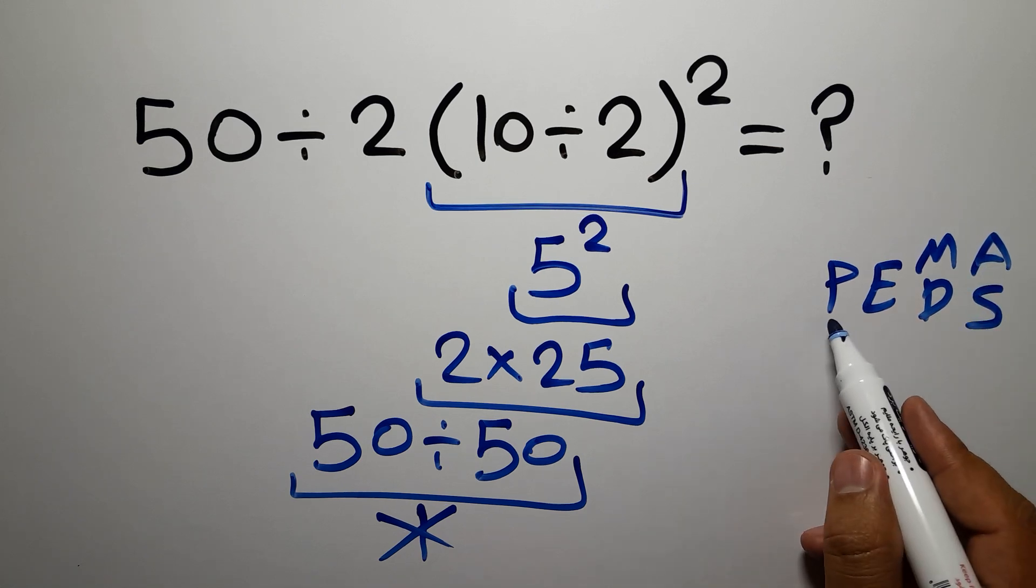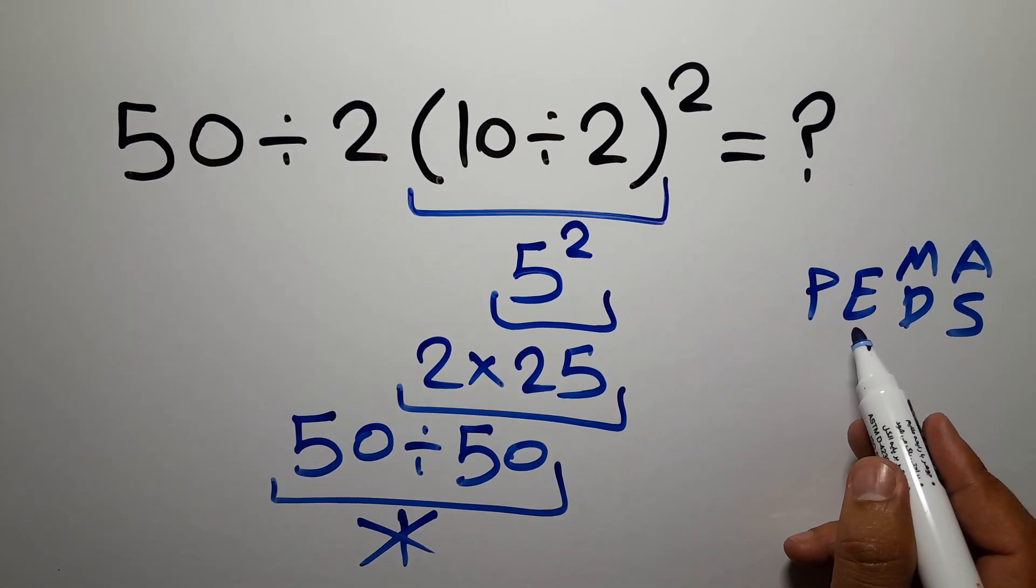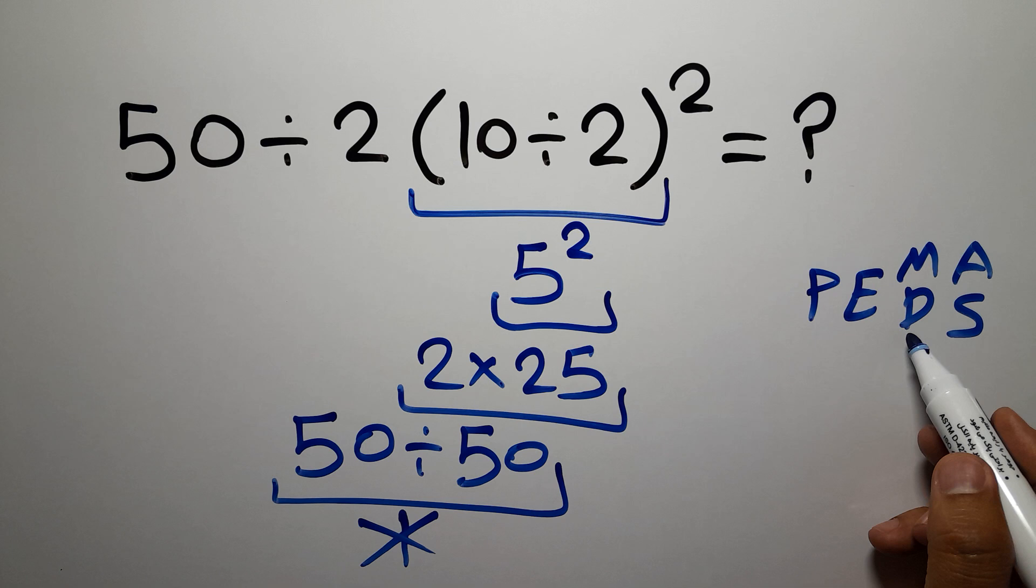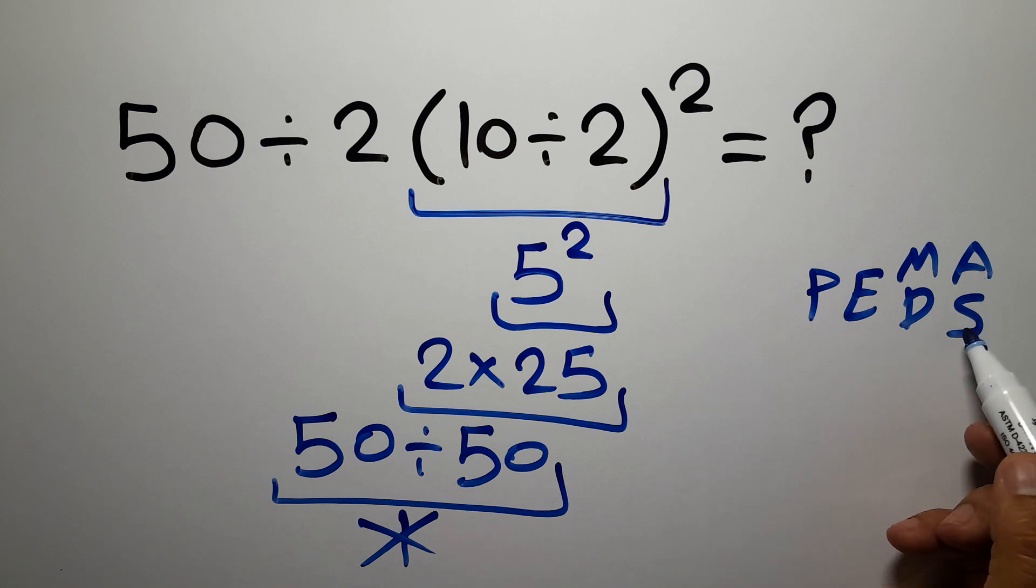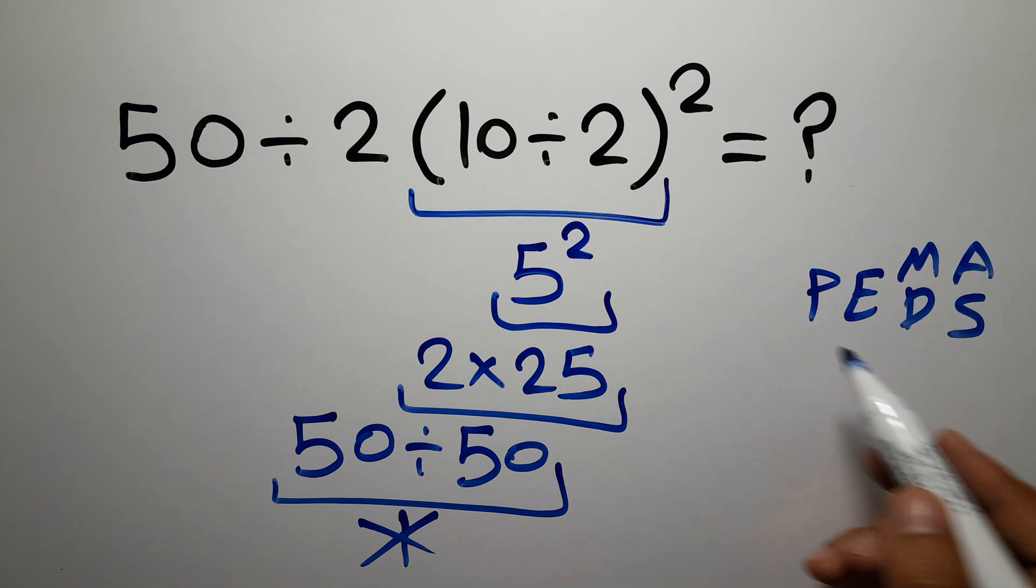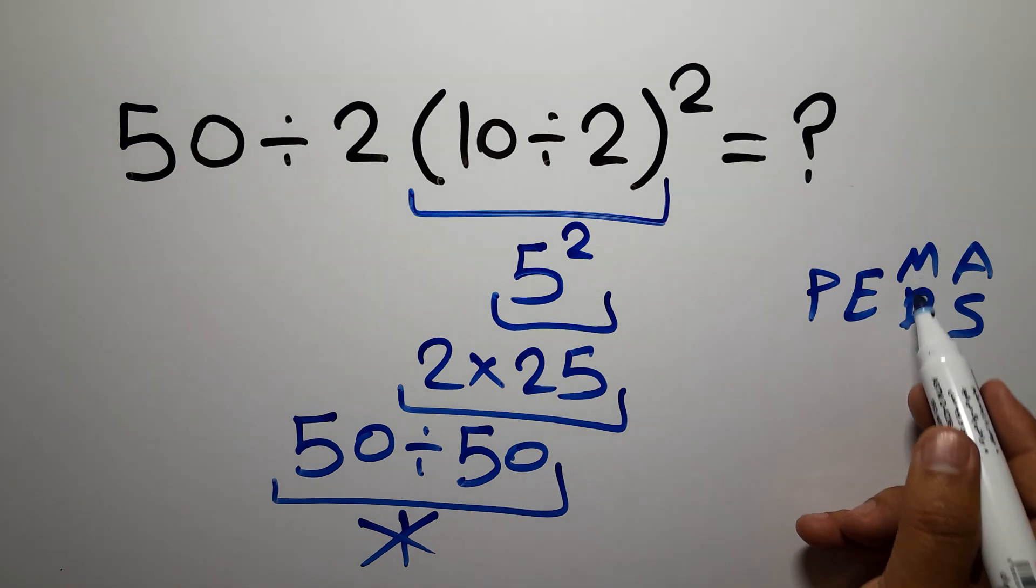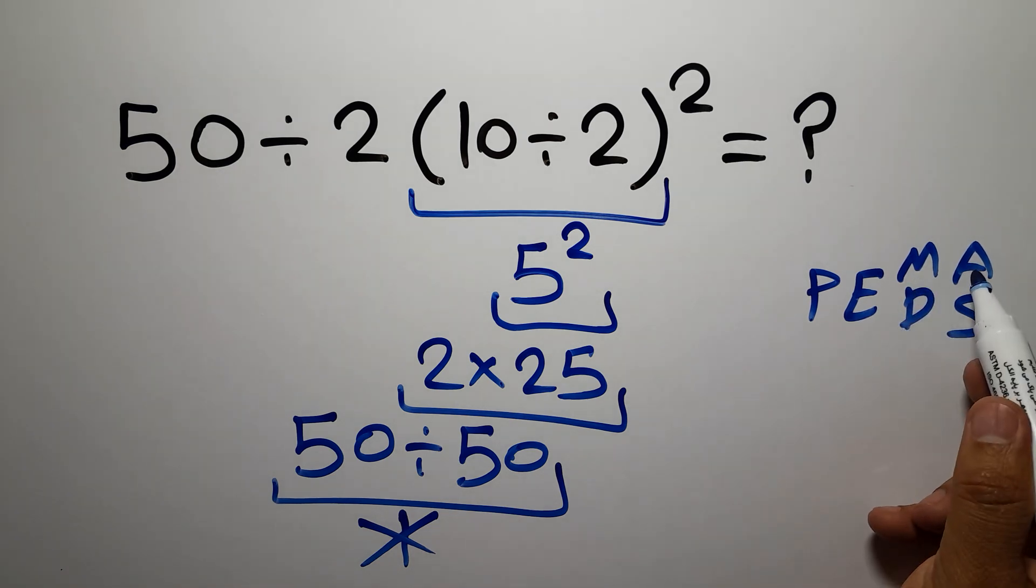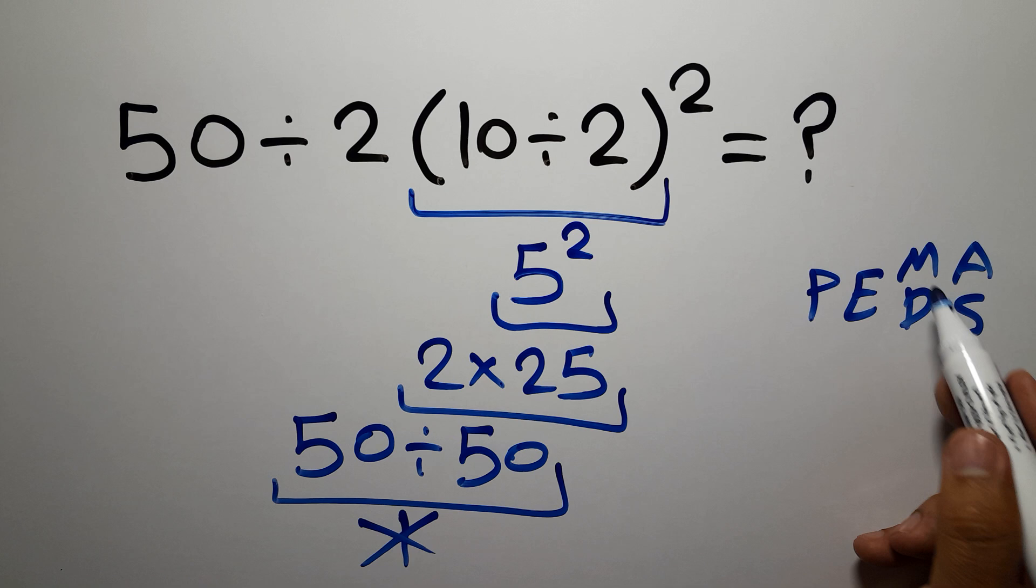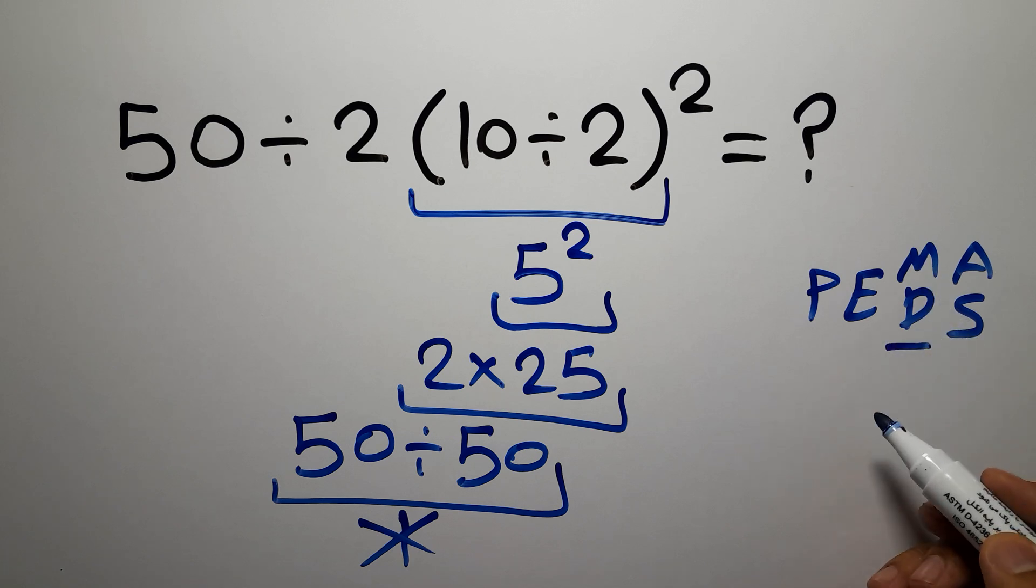PEMDAS: P stands for parentheses, E for exponents, M and D for multiplication and division, and A and S for addition and subtraction. First we do parentheses, then exponents, then multiplication or division, and finally addition or subtraction. Remember that multiplication and division have equal priority and we work from left to right.